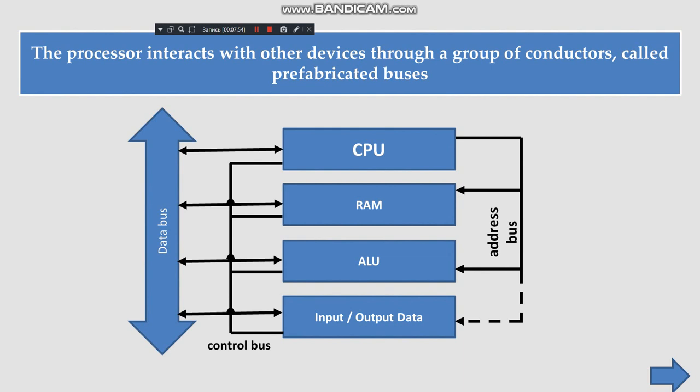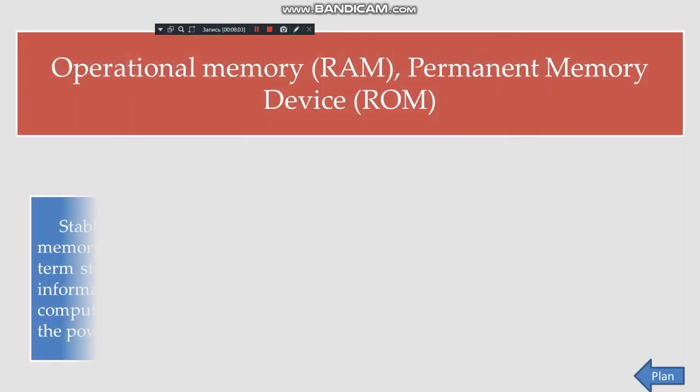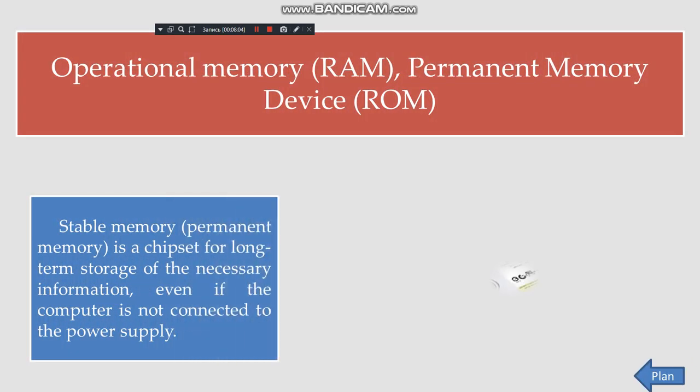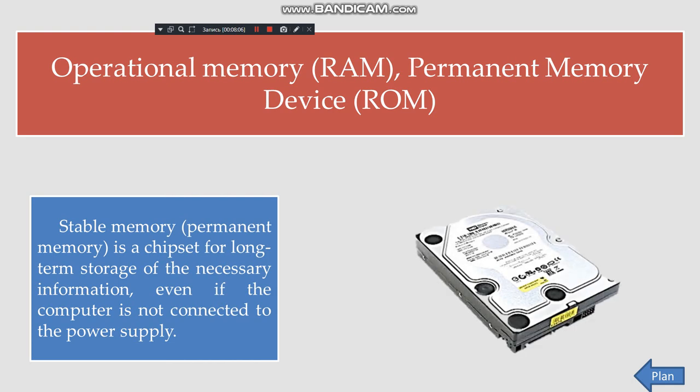The processor interacts with other devices through conductors called prefabricated buses. Permanent memory is a chipset for long-term storage of necessary information, retaining data even if the computer is not connected to the power supply.